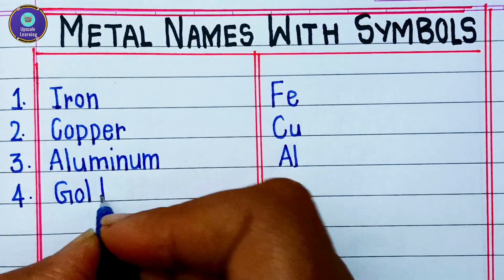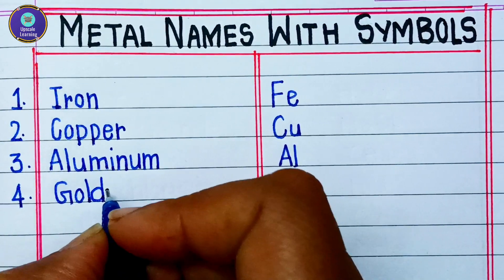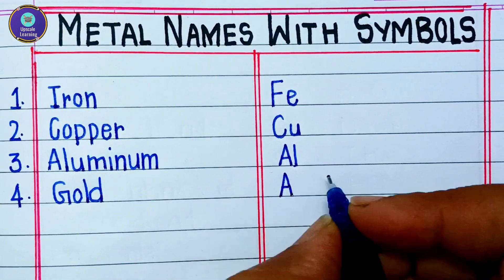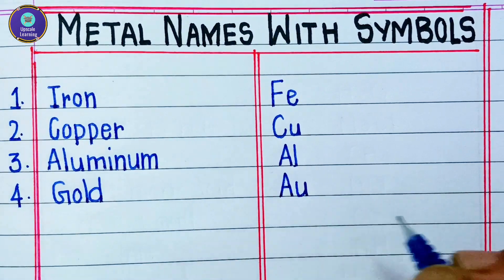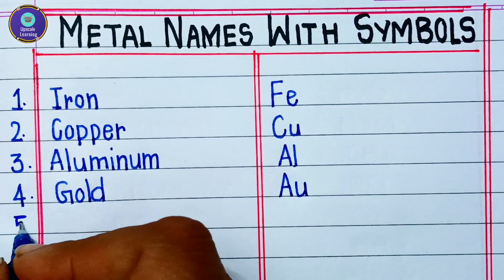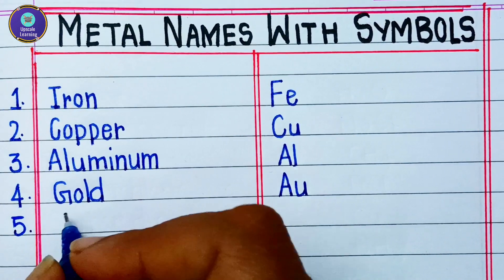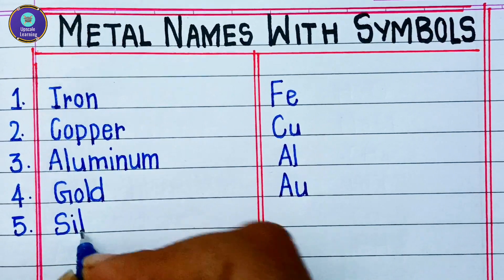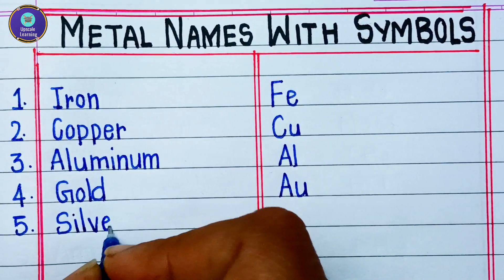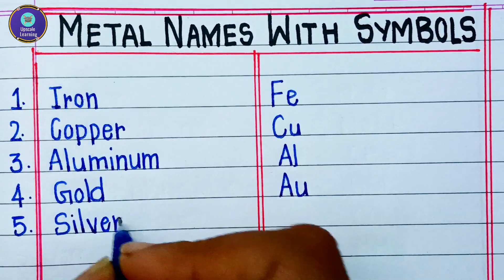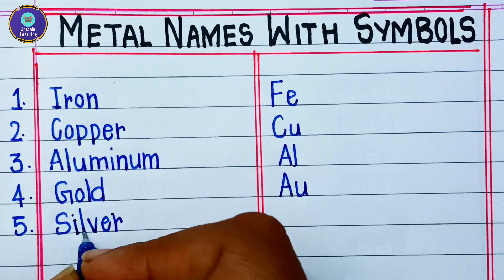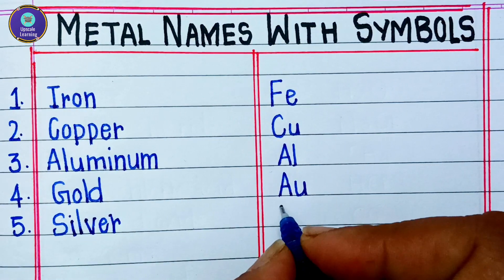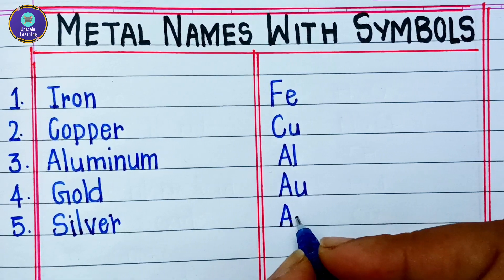Fourth is gold — G, O, L, D — gold. The symbol for gold is Au. Fifth one is silver — S, I, L, V, E, R — and the symbol for silver is Ag.